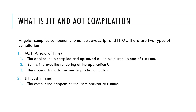What is JIT and AOT compilation? Angular compiles components to native JavaScript and HTML. There are two types of compilation: AOT (Ahead of Time) and JIT (Just in Time). In the case of AOT, the application is compiled and optimized at build time instead of runtime, which improves rendering of the application UI — this approach should be used in production builds. In the case of JIT, compilation happens on the user's browser at runtime.